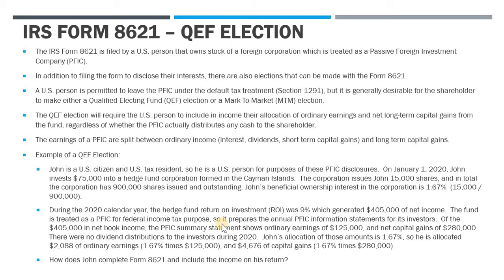The fund prepares annual PFIC statements for its investors. Of the $405K in book income, the PFIC summary statement shows ordinary earnings of $125,000 and net long-term capital gains of $280,000 — which together equal the $405,000. Also during 2020, there were no dividend distributions to investors, so no cash went to John or any other shareholder in this hedge fund. John's allocation at 1.67% gives him $2,088 of ordinary earnings and $4,676 of capital gains.